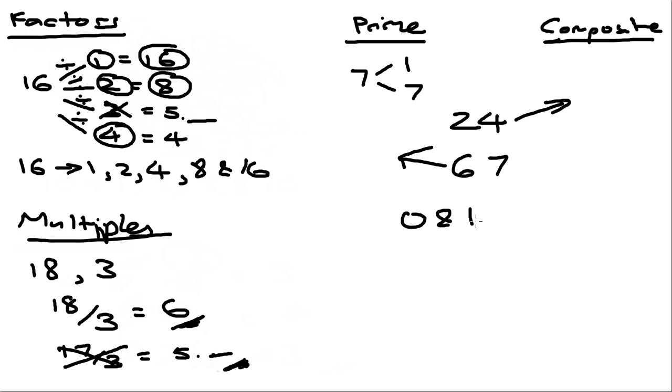You have to take note that 0 and 1, these two are not considered a prime number and it's also not a composite number.